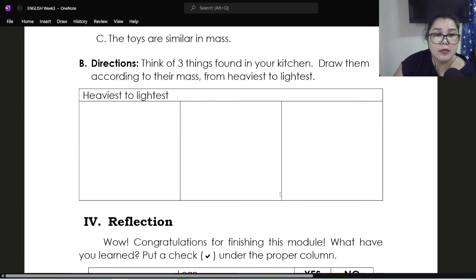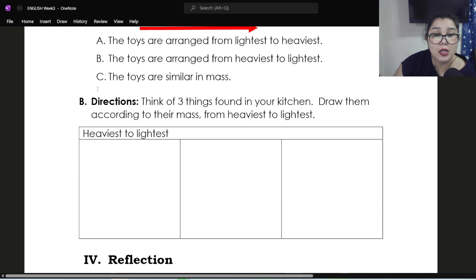And for part B, this time you need to do something. Directions: think of three things found in your kitchen. Draw them according to their mass from heaviest to lightest. So we have here three boxes. It means you need to choose three things found in your kitchen. And then the drawing that you're going to make should start from the heaviest, which one is the heaviest, down to the lightest. So don't forget to draw and color them also.